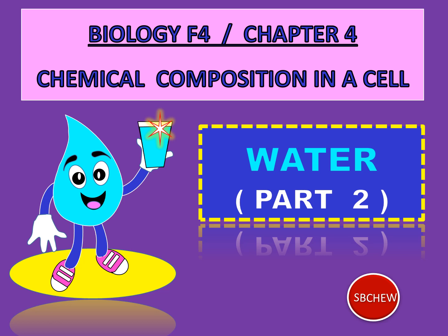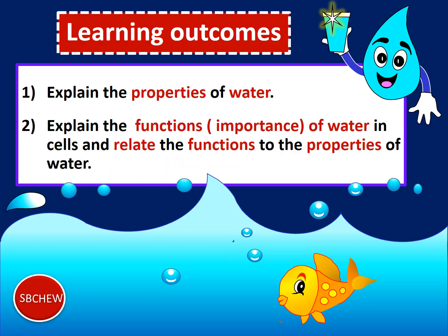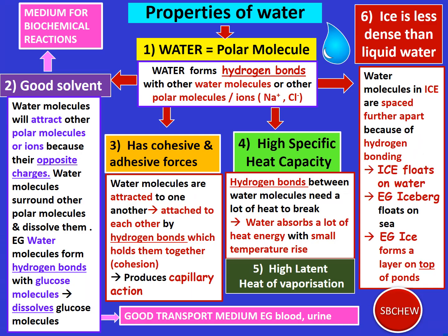The learning outcomes for this lesson are as follows: after the lesson we should be able to explain the properties of water, explain the functions or the importance of water in the cells, and relate the functions to the properties of water. Let us look at this schematic diagram on the properties of water.